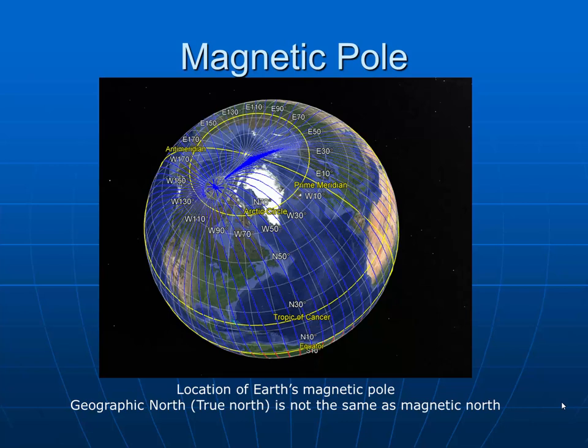Another significant point for navigation is the Earth's magnetic pole. Indicated by the blue lines here, you can see the north magnetic pole is located in the islands north of Canada. This is distinctly different from true north, or the geographic pole. The magnetic pole is where compasses point, and the geographic pole, or true north, is where the Earth's axis is located — our point of rotation.